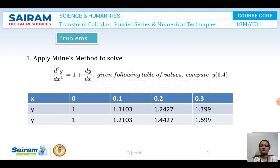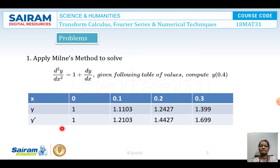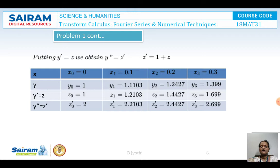Problem 1: Apply Milne's method to solve d²y/dx² equals 1 plus dy/dx, given the following table of values. Compute y(0.4). The x values given are 0.1, 0.2, and 0.3, so we need to compute the next value y(0.4). The y values are 1, 1.1103, 1.2427, and 1.399. The y-dash values (z values) are 1, 1.2103, 1.4427, and 1.699. We need to obtain the values of z-dash: z0-dash, z1-dash, z2-dash, and z3-dash using the given values. Let us tabulate now.